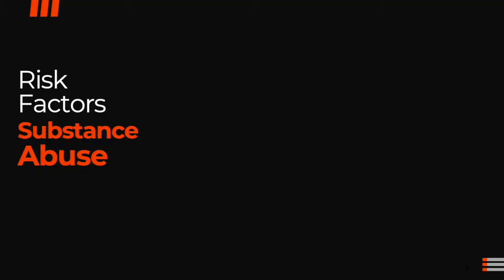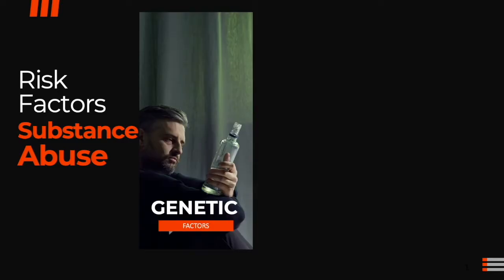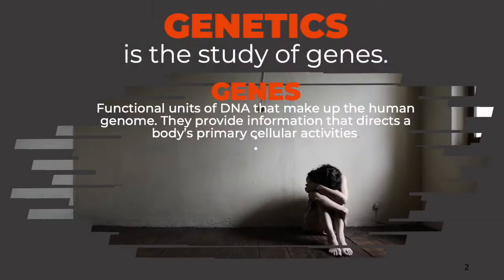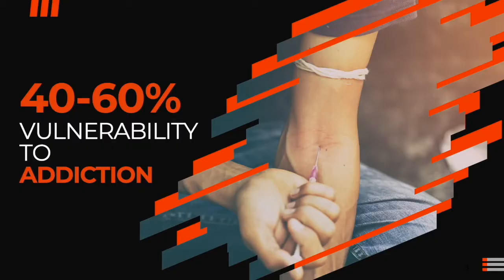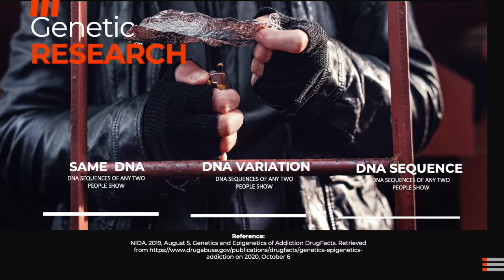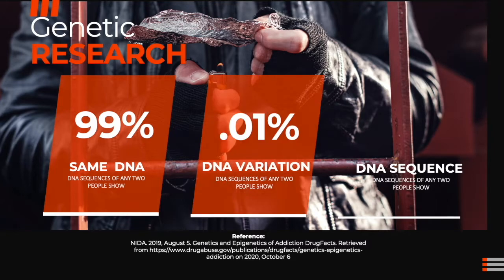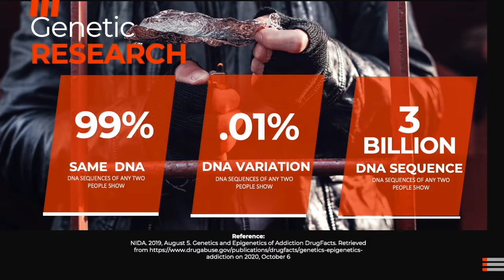There are three vulnerabilities or risks to addiction: genetic, environmental, and comorbid with mental illness. Genetics has a blueprint of health and disease. Genes are functional units of DNA that make up the human genome and provide information that directs a body's primary cellular activities. It is estimated that 40 to 60% of the vulnerability to addiction is attributed to genetic factors. Research on the human genome has shown that the DNA sequence of any two people are 99.9% the same. However, that 0.1% variation is profoundly essential, accounting for 3 million differences in nearly 3 billion base pairs of DNA sequence.